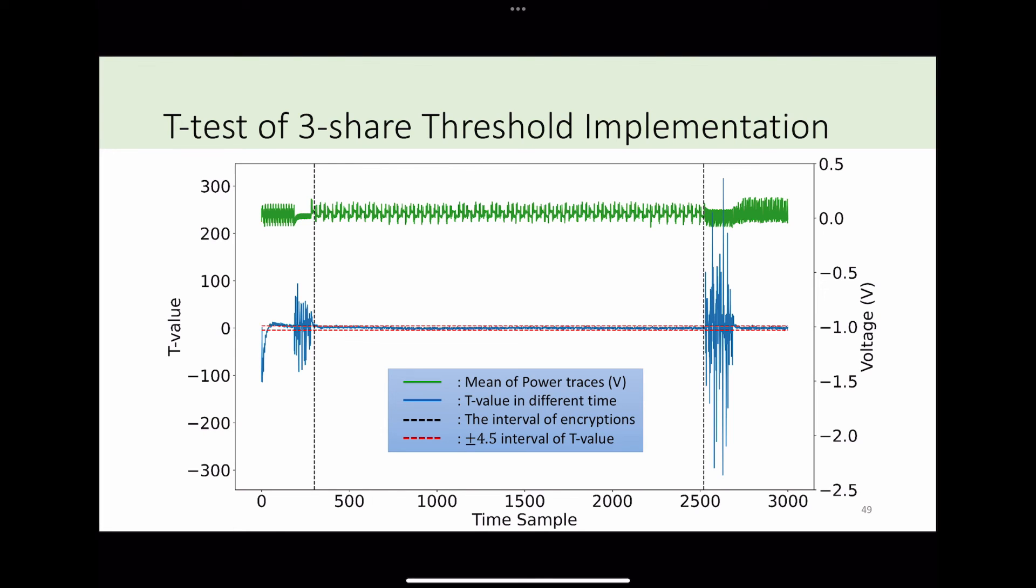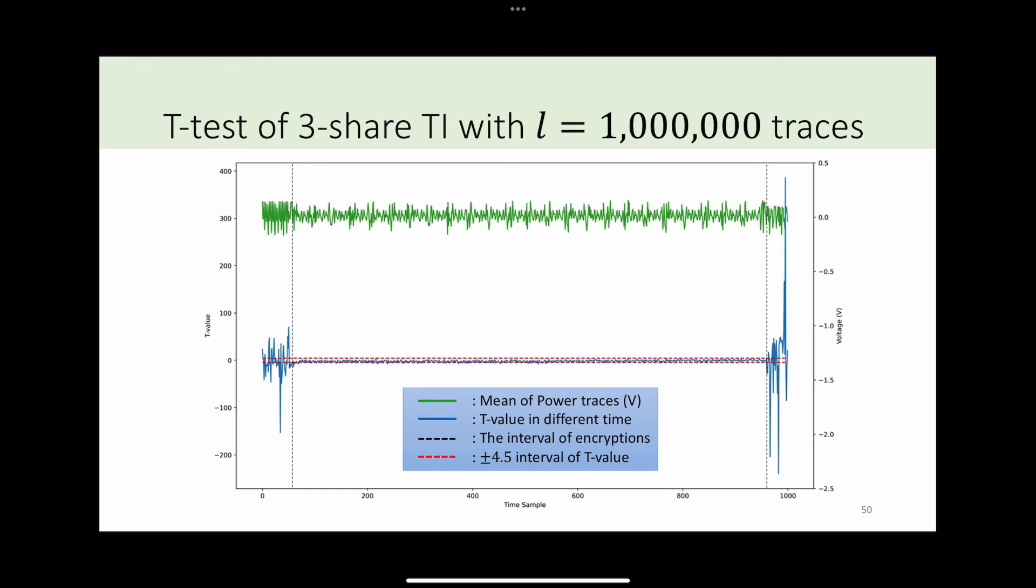Here is the result of three-share threshold implementation. We can see that the t-statistic value is inside the 4.5 interval. In addition, since the first and third part contain the public values, such as ciphertext, it is normal that the t-statistic value exceeds 4.5. To verify the security of three-share threshold implementation, we capture 1 million traces and detect its leakage. The t-value is still inside the 4.5 interval. Therefore, we can prove that our three-share threshold implementation can pass the security level 4 inside ISO 17825.